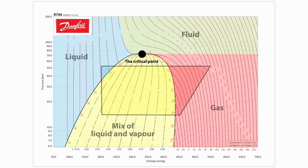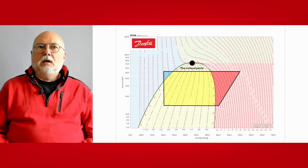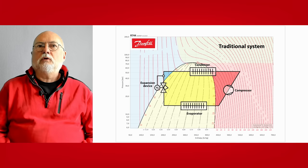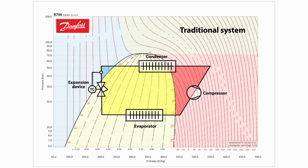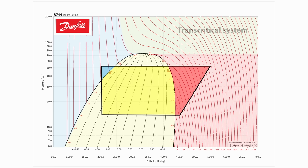Here the log pH diagram with carbon dioxide with the critical point. This looks like our usual playground, so I'll just show you the components in what we could call a traditional system. But we're going to talk about transcritical systems, so what is a transcritical anyway?